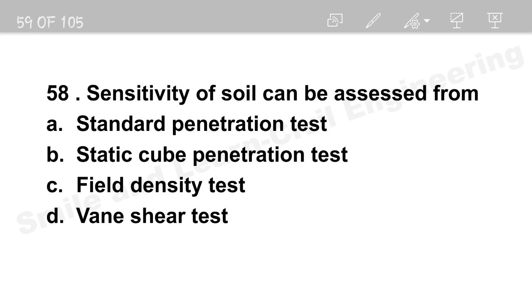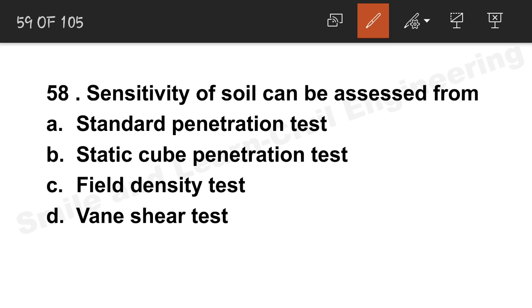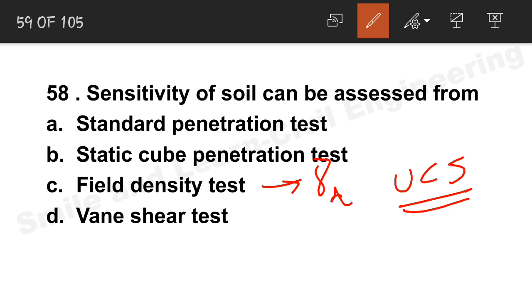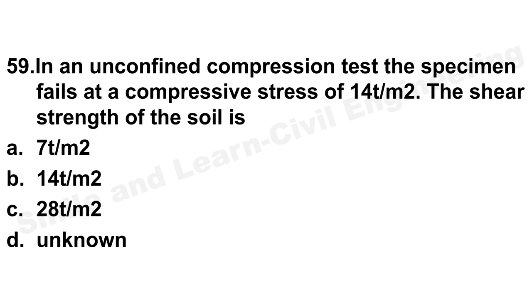Question 58: Sensitivity of a soil can be assessed from which test? Sensitivity is defined as the ratio of unconfined compressive strength of the undisturbed sample to that of the remolded sample. The unconfined compression test measures this. Option D may be the correct answer, but please check and note it down.